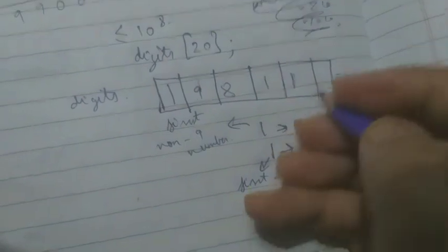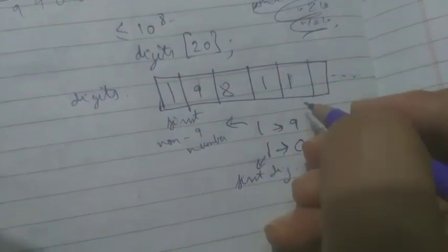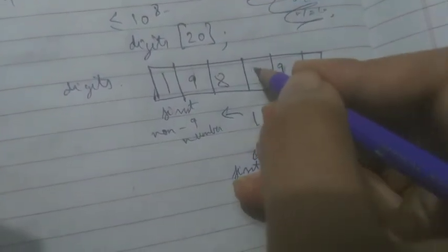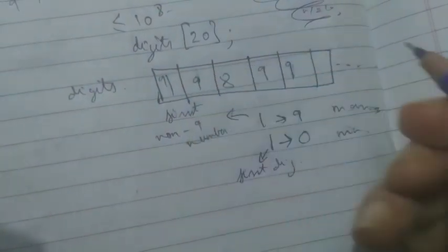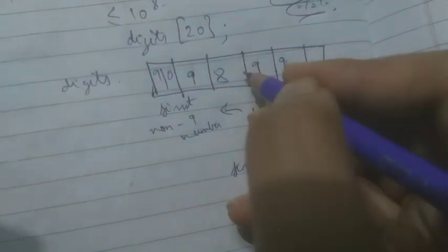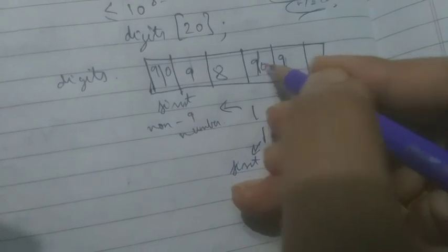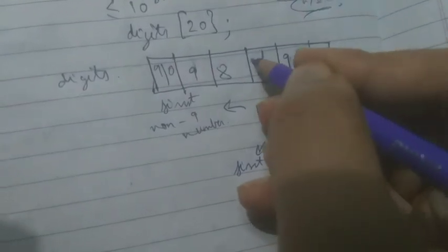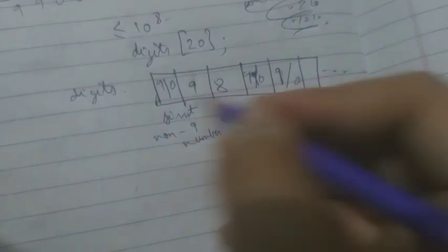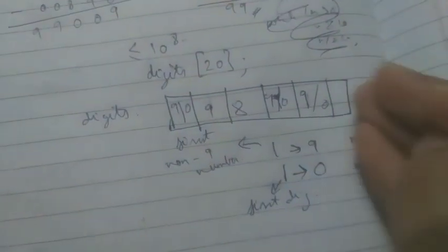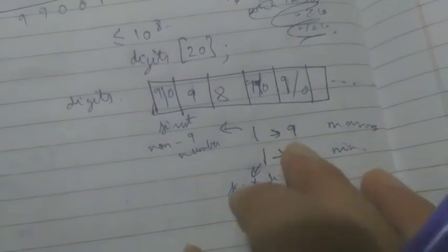So once you are done with this, you have to replace them. So if I replace this with 9, it becomes this number, and if I replace it with 0, it becomes this number. So now you can compute the maximum, the minimum, and you can return the answer.